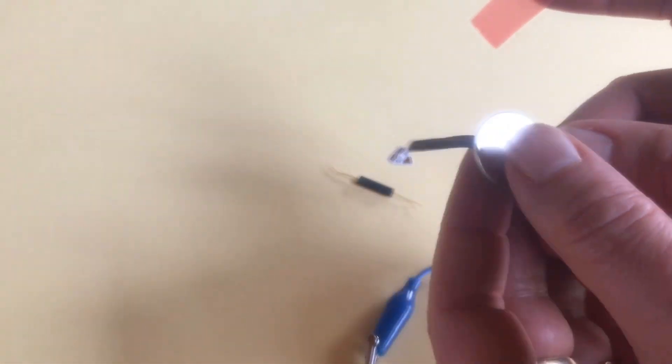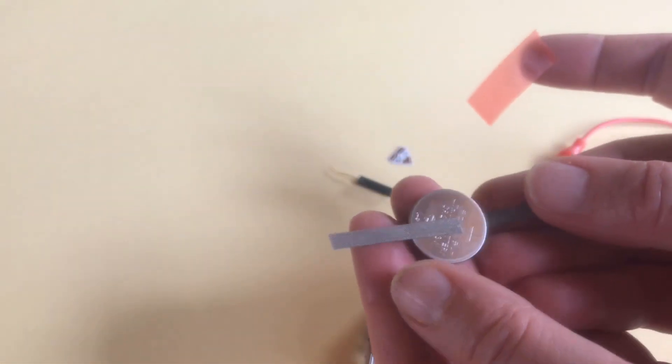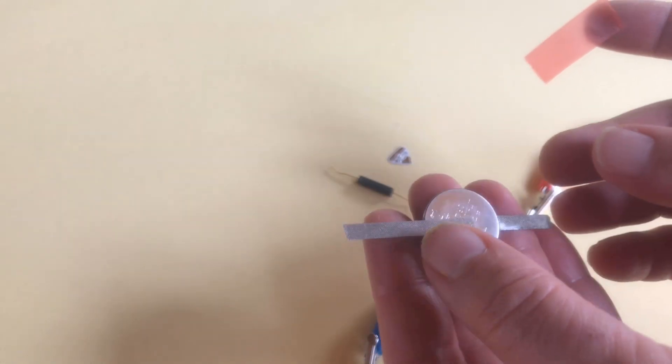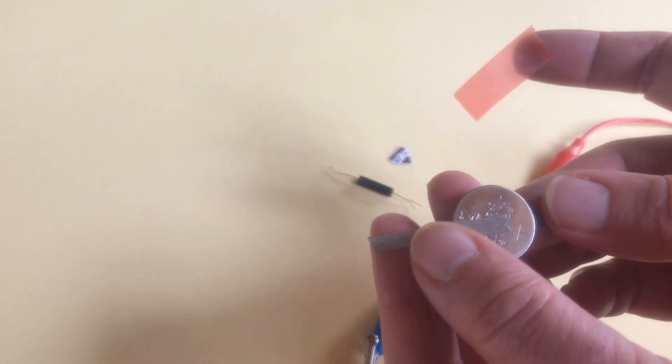So if you don't have a battery holder, you can use conductive fabric tape to kind of make one. I'll show you a trick.